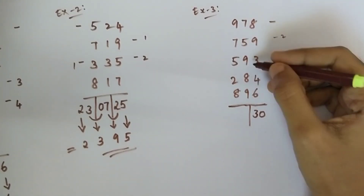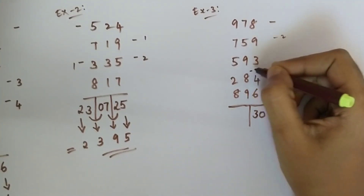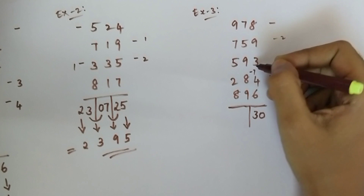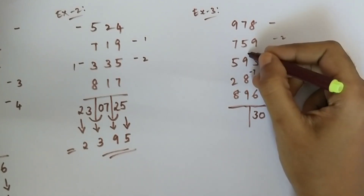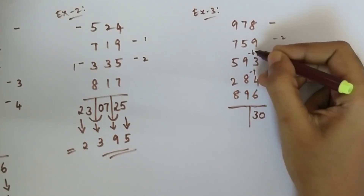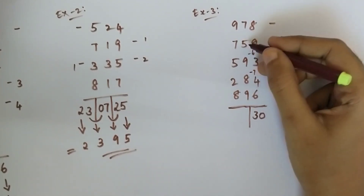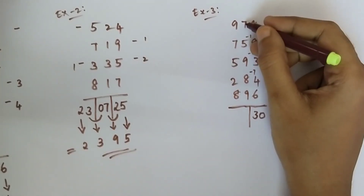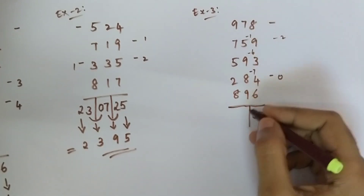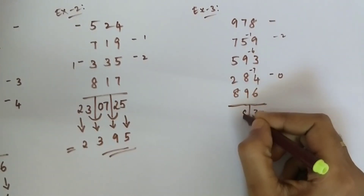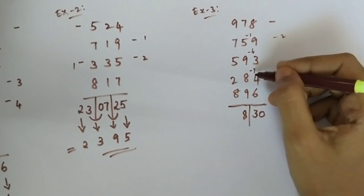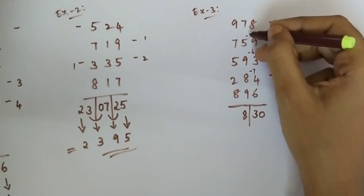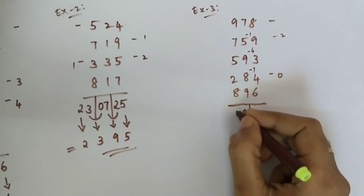Now I am going to add all the middle digits. 9 plus 8 is 17, 7 plus 9 is 16, 6 plus 5 is 11, 1 plus 7 is 8. There are 1, 2, and 3 bars.